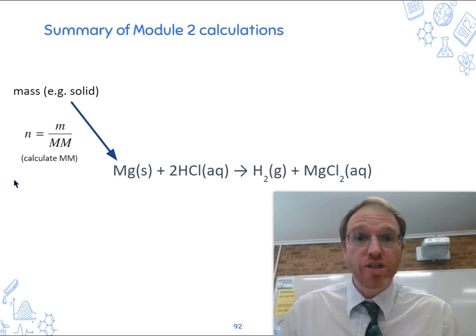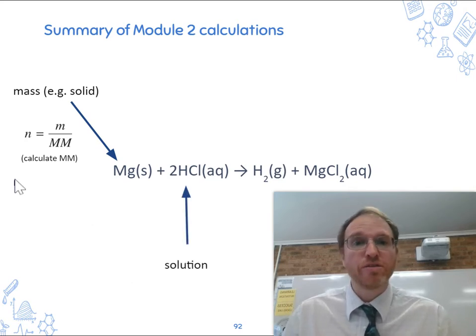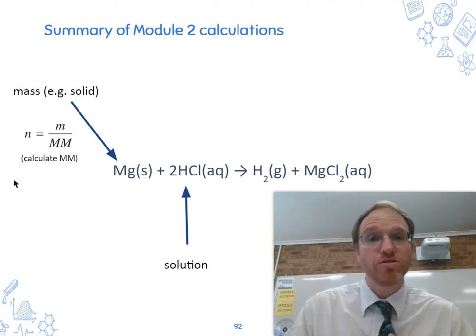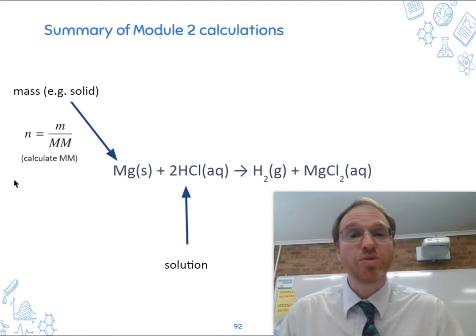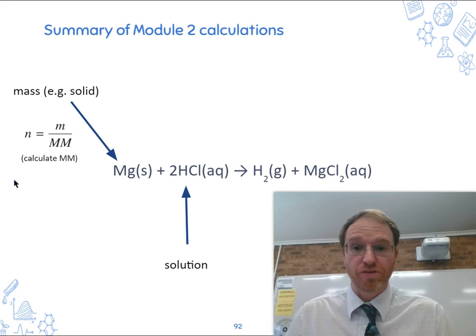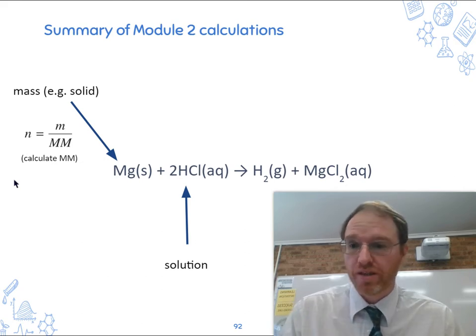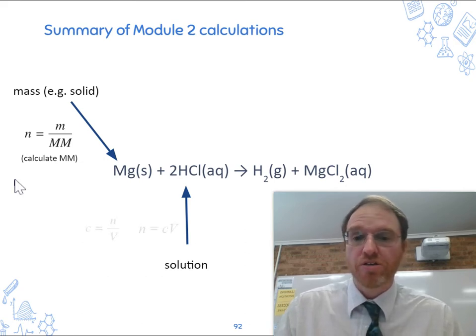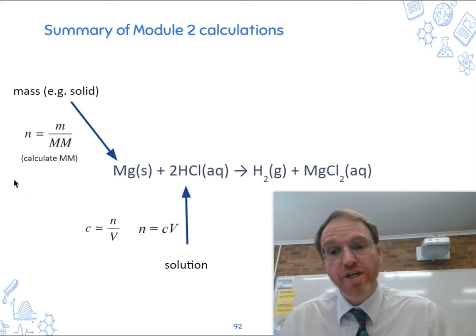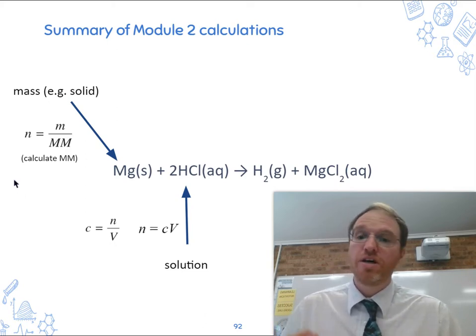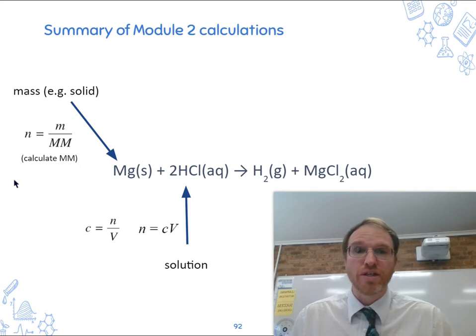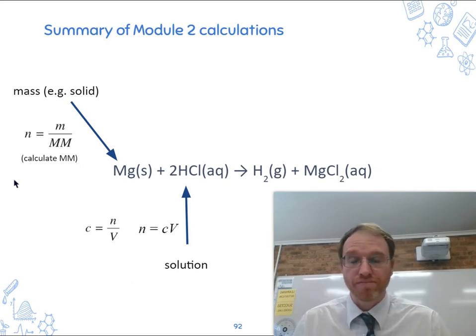So reactions also involve solutions and you may know an amount of solution, a volume and a concentration for example, and you need to work out how many moles of that solution we've got because that's what we work with in the reaction, the equation. So how do we work it out? We know the concentration is n on V, that's given to you on the data sheet. So the number of moles is cV, concentration times volume.